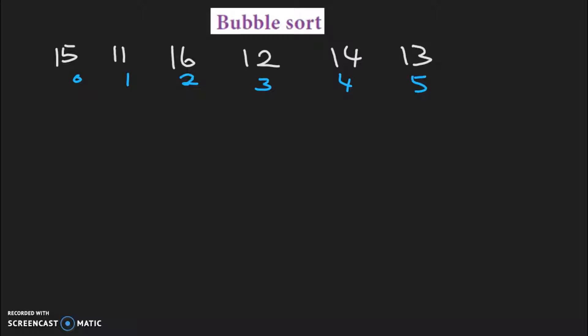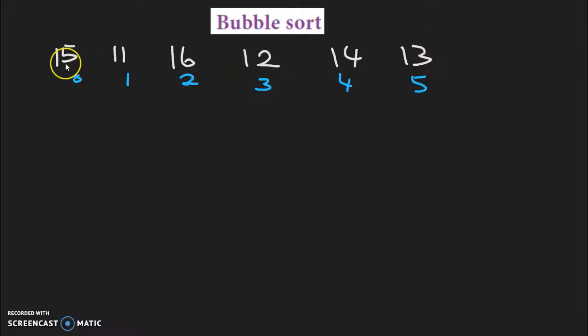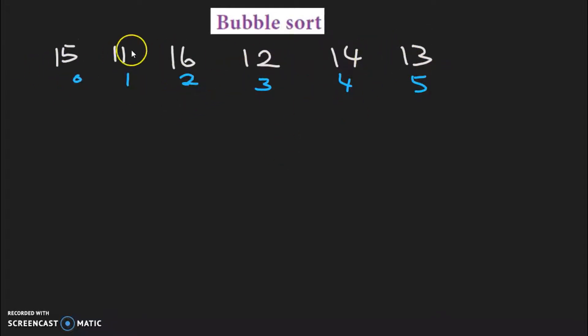First, we will see the bubble sort algorithm. This is the unsorted array: 15, 11, 16, 12, 14, 13. There are 6 elements.